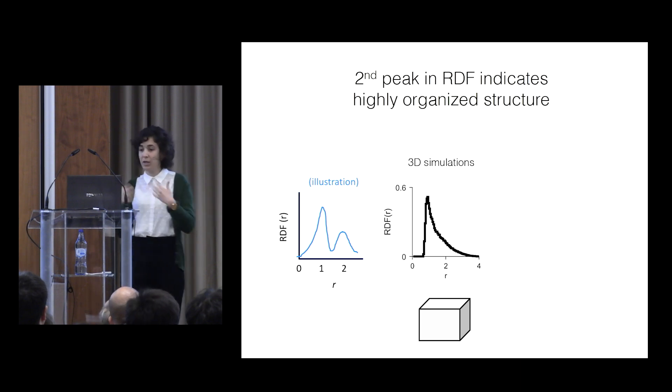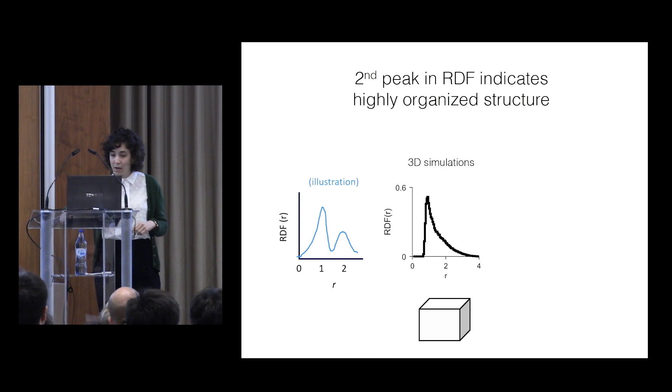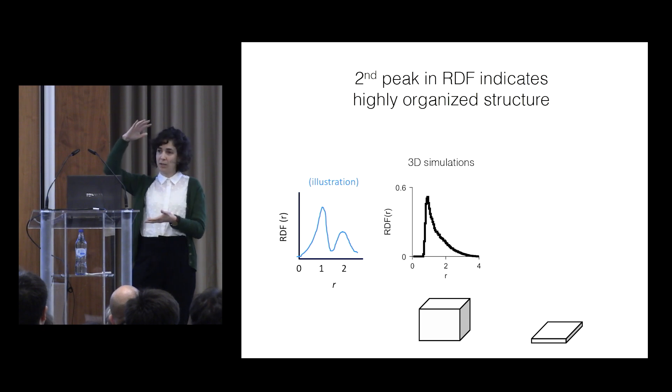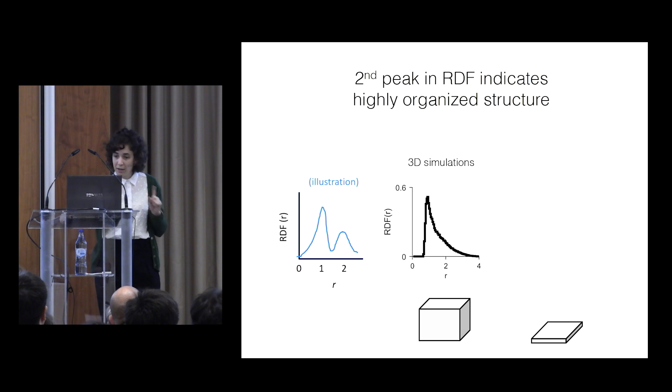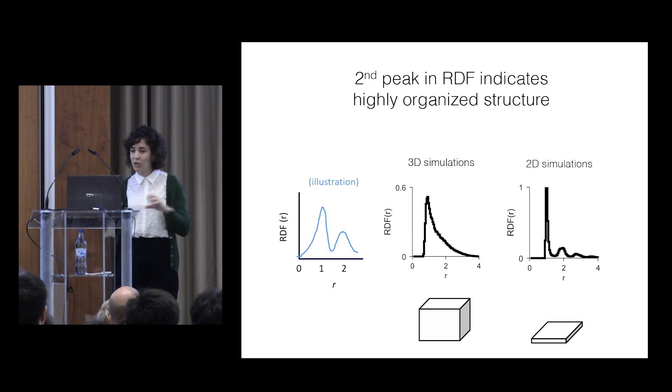It's not globally ordered in the simulations as well. But now we wanted to do simulations in 2D, and we did that by just taking the 3D boxes and squishing them to 10 centimeters height. And here, we do get the second peak.